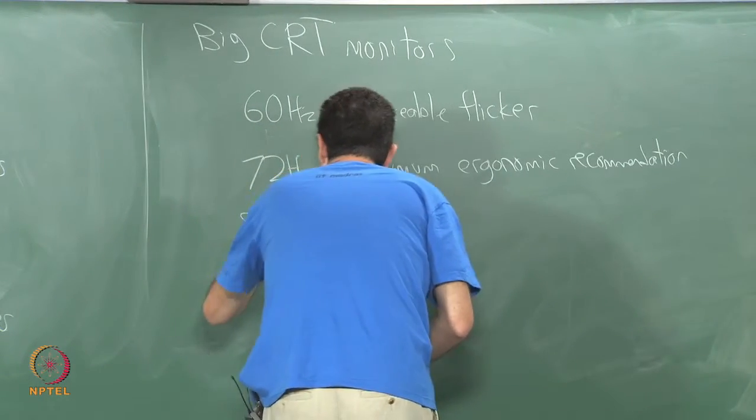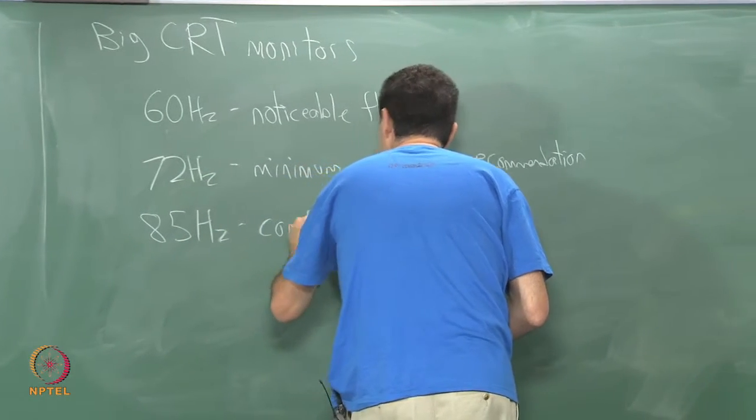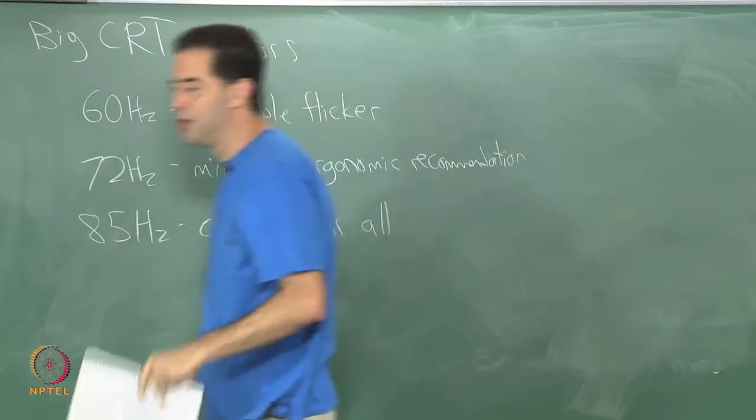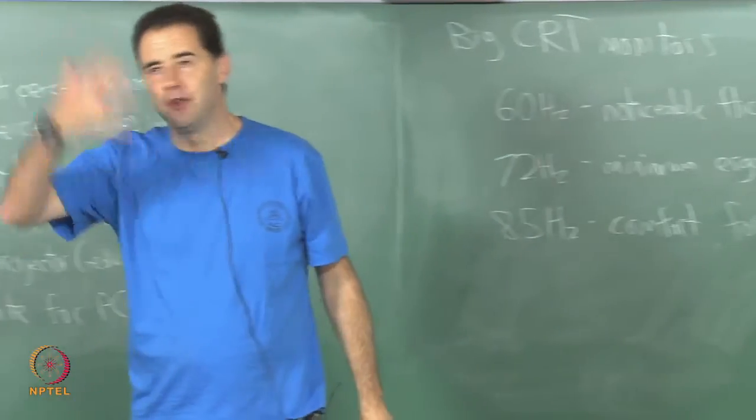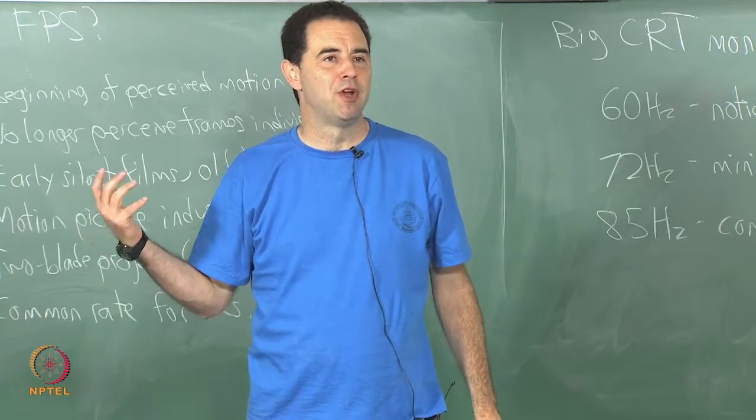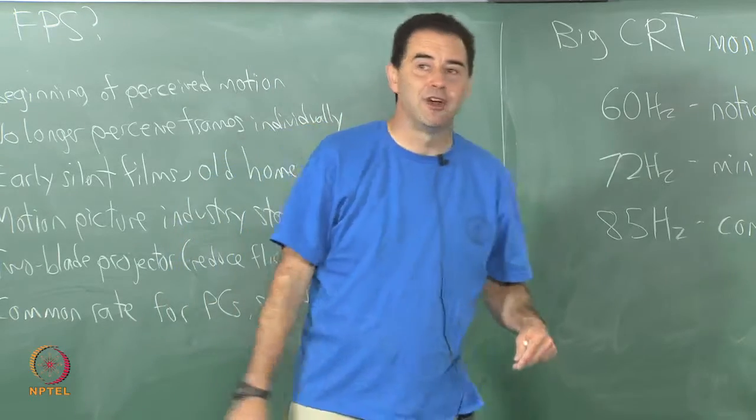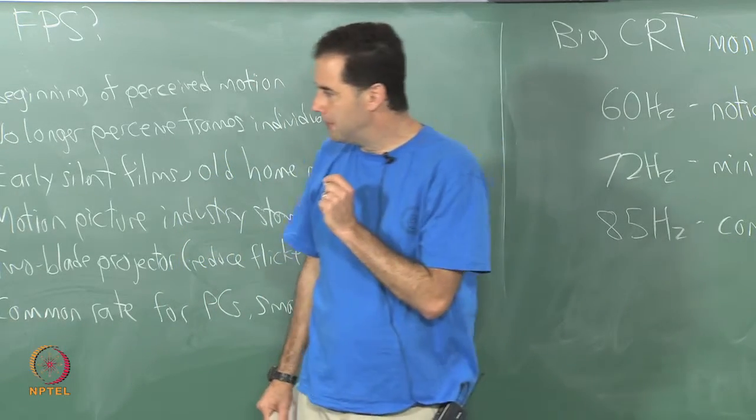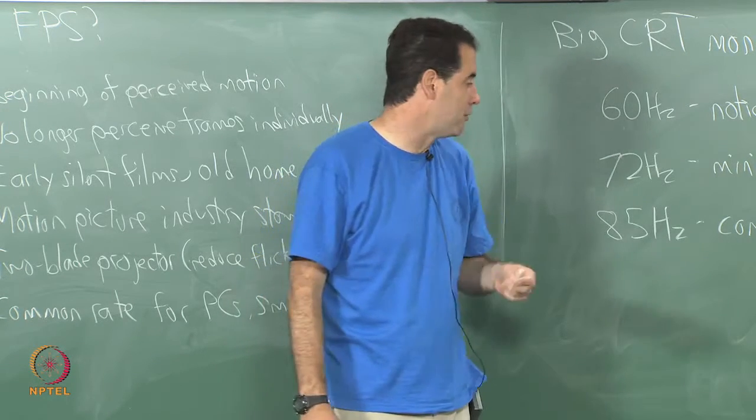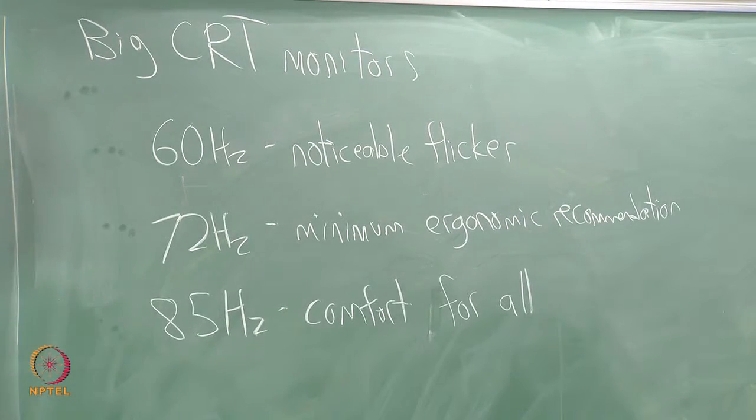So, eventually if you get up to 85 hertz this was deemed to be comfortable for everyone. So, very often monitor timings were up in the 80s for the refresh rate on CRT displays. Once we went to LCD monitors, the display rates went back to 60 hertz because flicker was not a problem because the pixels are always on. So, then the flicker is not as much of an issue anymore. There is not really a perceived flicker, but when we had flicker on CRT monitors, the rates got pushed up like this.